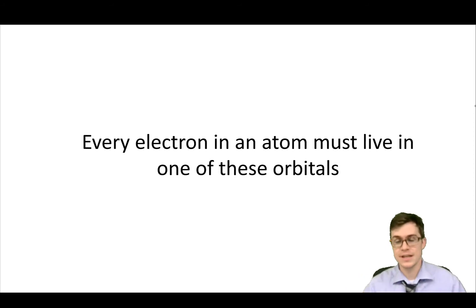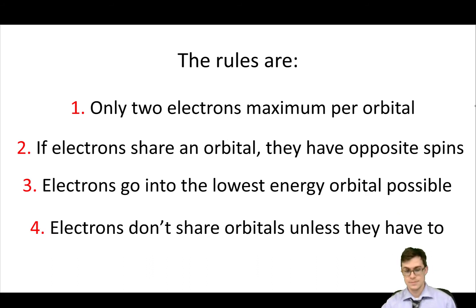Now, if an electron is in an atom, it has to be living in one of these orbitals. There are some rules. The first rule is that you can only have two electrons in an orbital. The second rule is that if they share, they must be oppositely spinning. That seems weird, but just one of them has to be up and down. It's a weird quantum property electrons have. Don't worry too much about that one here.